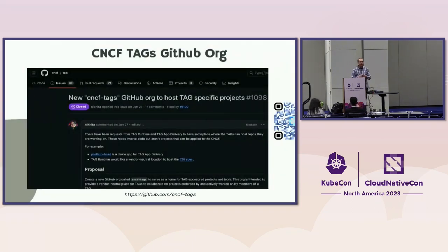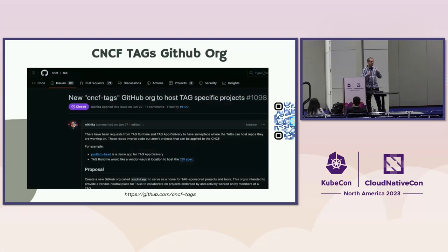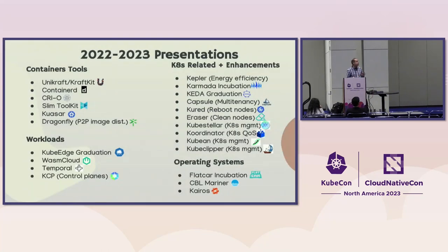Another thing we've done is recently create the CNCF TAGs GitHub organization — Nikita from the TOC created the pull request to start this initiative. Right now it's available to all the TAGs. One of our working groups actually created an artifact hosted in this organization, which is a home for working groups to share things across the community and have them used by several organizations or different community members.